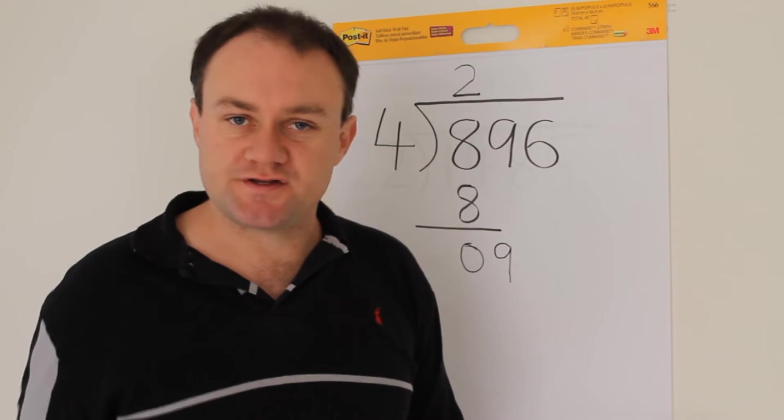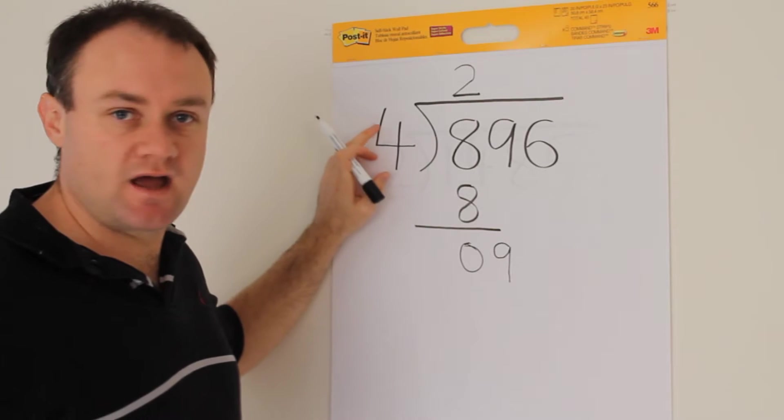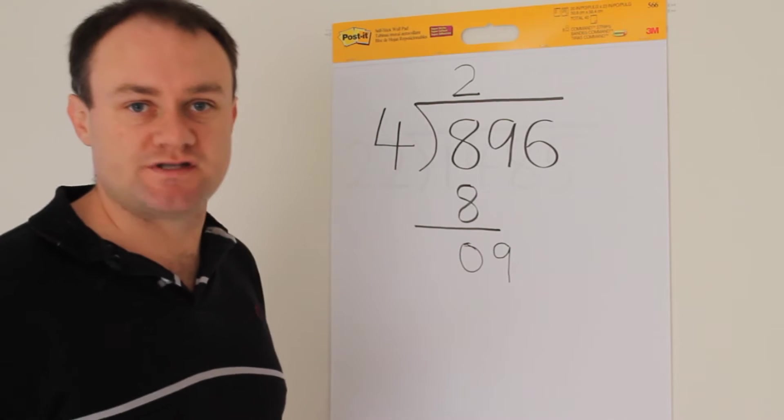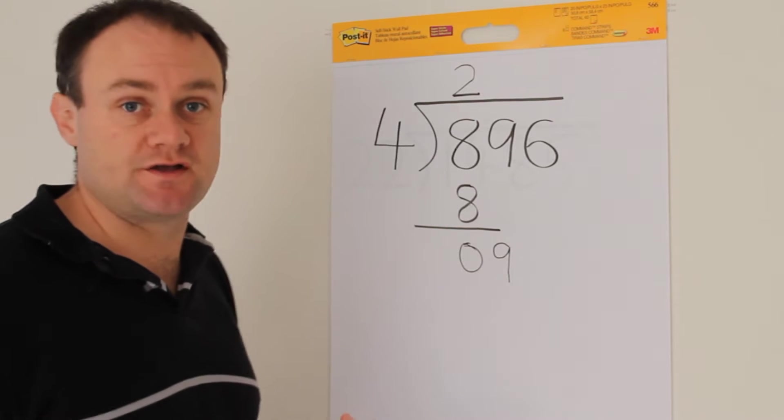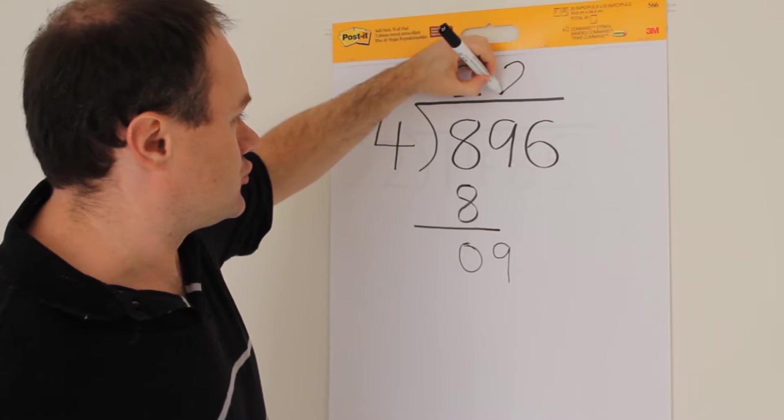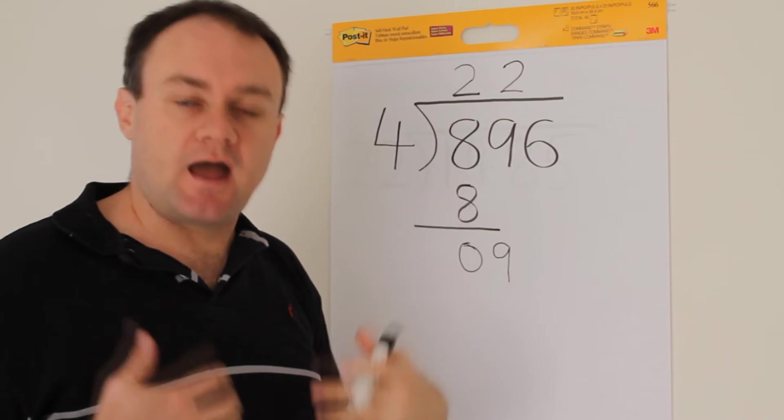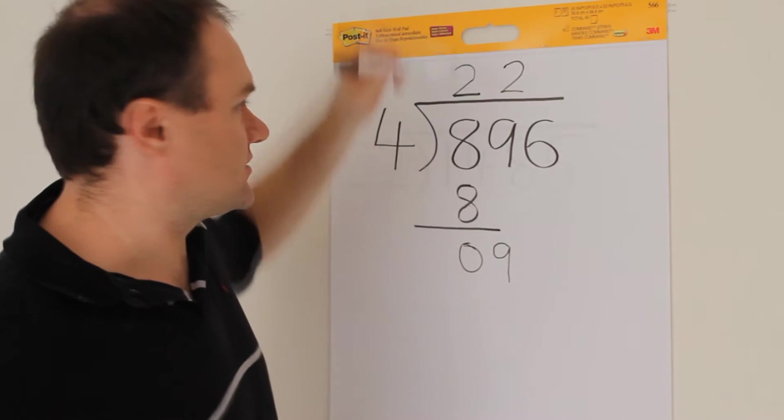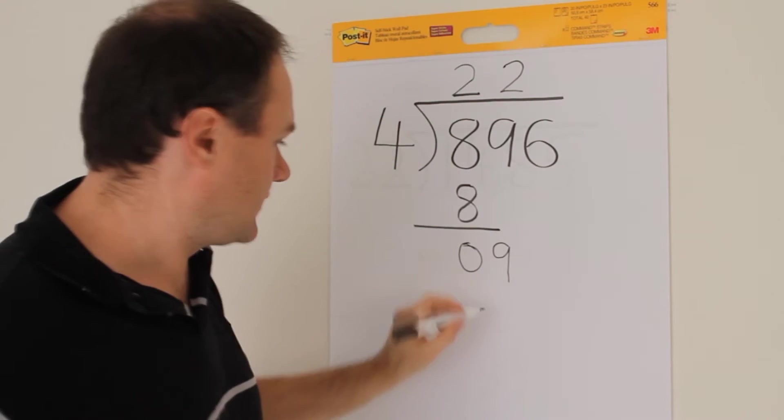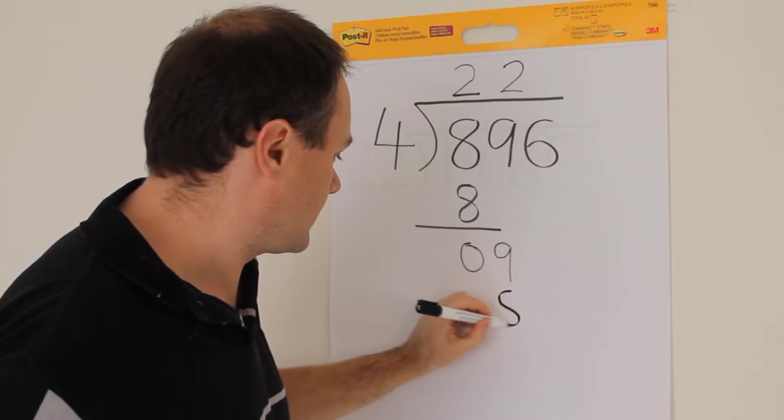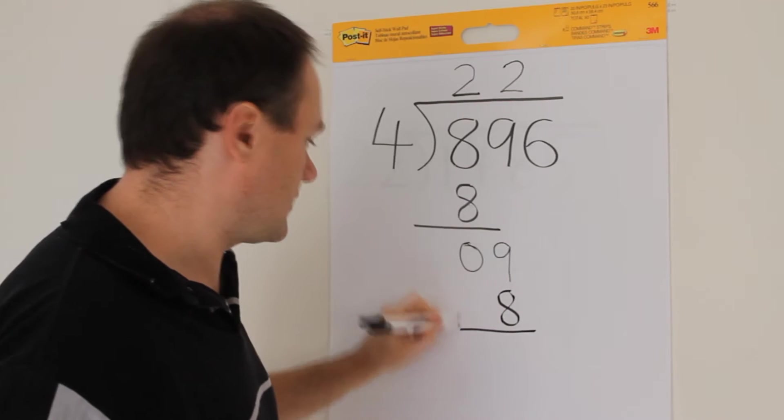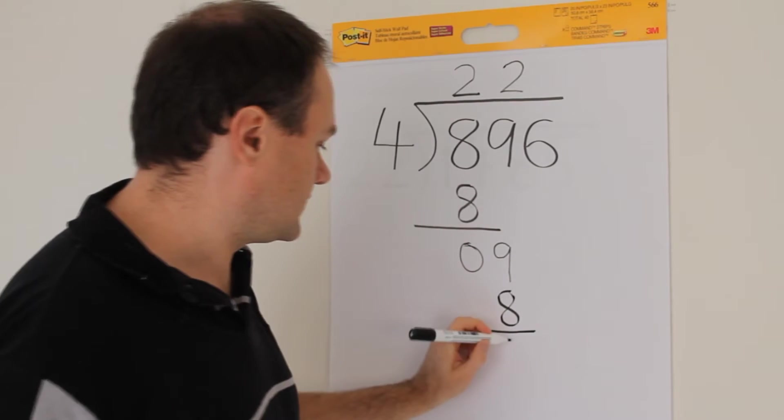And then the process is repeated, starting now by saying, how many times does 4 go into this number here, which is 9? The answer is that 4 goes into 9 twice because 2 fours are 8. I write 2 up here and continue with the process. Again, a multiplication step. 2 times 4 equals 8. This time I write it here. And now we proceed to the subtraction step.